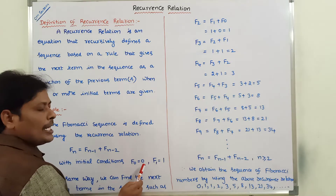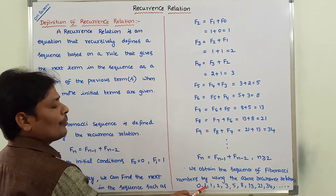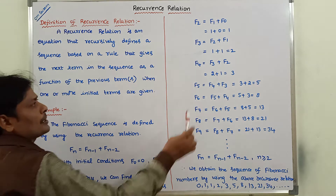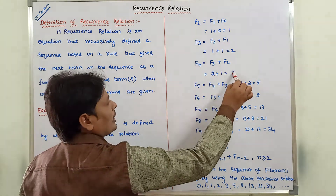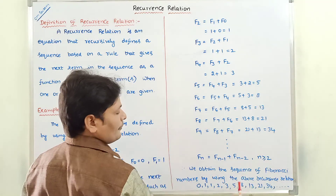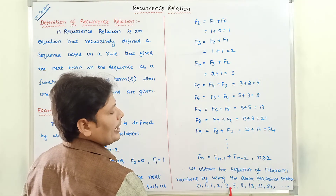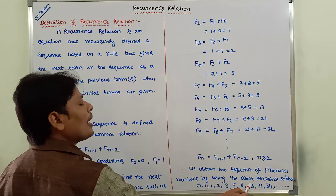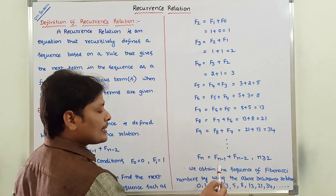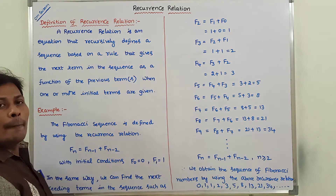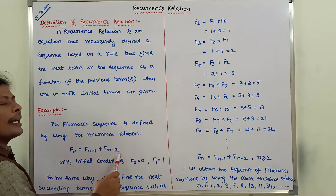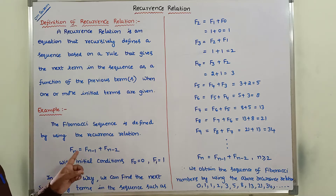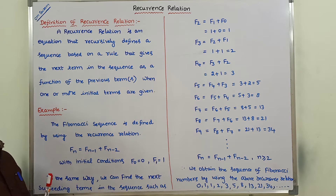We obtain the Fibonacci sequence by using this recurrence relation with initial conditions. The first two terms are 0 and 1. The next terms as a function of the two previous terms are: 1, 2, 3, 5, 8, 13, 21, 34. So this is the Fibonacci sequence, and this sequence is found by using this recurrence relation. Hence, this is called the Fibonacci sequence recurrence relation.